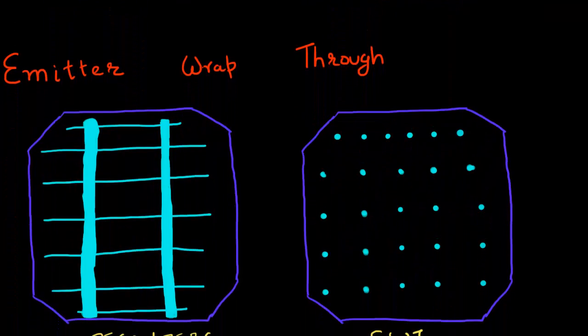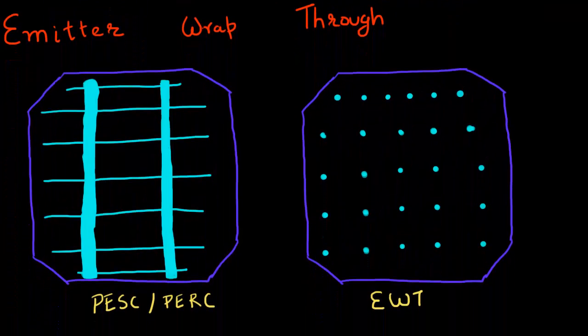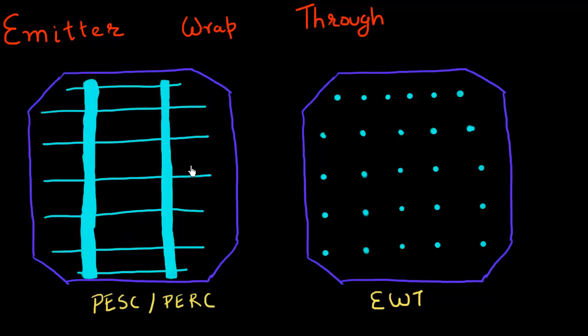If you look at the top view of a conventional cell, you have these fingers which collect the current, and then this is collected onto these bus bars, which are then interconnected between the series of cells. You see that approximately seven to eight percent area on the top is occupied by these metal fingers and metal bus bars.